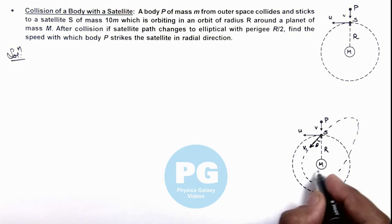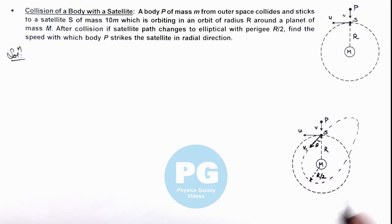Where the closest distance from center of planet is R by 2, where we can consider the combined body with the satellite is moving with the velocity v2. And as it is the closest distance, this v2 will be maximum. Now in this situation here.